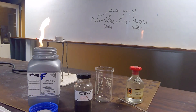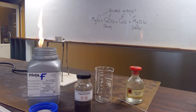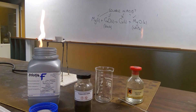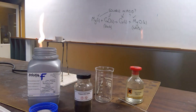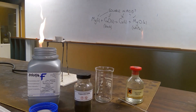This is a video to look at the reaction between magnesium and copper oxide. It is an example of a metal displacement reaction. It occurs between two solids, magnesium and copper oxide.